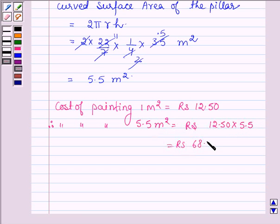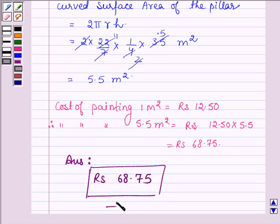Thus, the cost of painting the pillar at the rate of Rs. 12.50 per m² is Rs. 68.75. This is our answer.